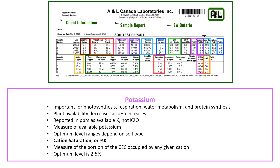The next nutrient is potassium, which performs many functions within the plant. It is important for photosynthesis, respiration, water metabolism, and protein synthesis. It activates more than 60 enzyme systems within the plant and regulates nutrient translocation. However, its availability is greatly affected by compaction within your soil — the more compaction you have, the less available potassium there may be for the plant. It is reported in PPM as a measurement of available potassium within the soil.